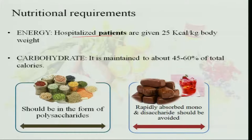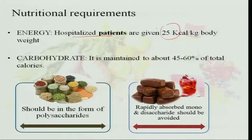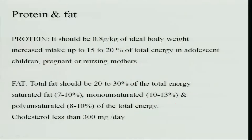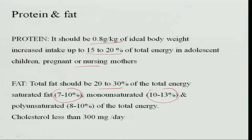When blood glucose is uncontrollable the patients are hospitalized. Such patients are given 25 kilocalories of energy per kg body weight. Carbohydrate is maintained at about 45 to 60 percent of total calories in the form of polysaccharides and rapidly absorbed mono and disaccharides. Protein should be 0.8 grams per kg of ideal body weight, with protein content at 15 to 20 percent of total energy for adolescents, pregnant, or nursing women. Total fat should be 20 to 30 percent of total energy intake, of which 7 to 10 percent from saturated fats, 10 to 13 percent from monounsaturated fat, and 8 to 10 percent from polyunsaturated fat. Cholesterol should be less than 300 milligrams per day.